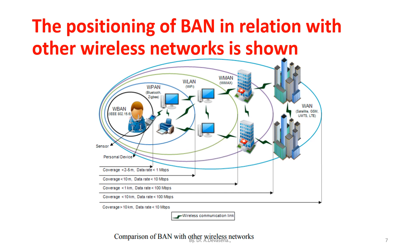The wireless networks are classified into wireless body area network. The coverage range for wireless body area network is 2 to 5 meters. The data rate is less than 1 megabits per second. Next we have wireless personal area network. Examples are Bluetooth and ZigBee. The coverage area for wireless personal area network is less than 10 meters. The data rate speed is less than 10 mbps.